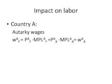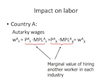Let's start with a bit of notation. WAY is the wage in sector Y in country A. WAX is the wage in country A in industry X. These two wages are equal to each other, as workers can move back and forth between industries until they're indifferent between working in one sector or another in autarky.